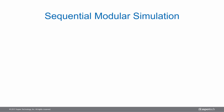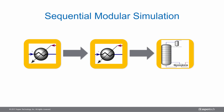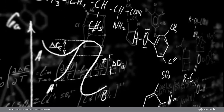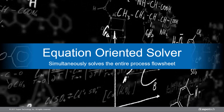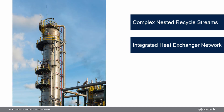When compared to Sequential Modular Simulation, which solves each unit in a process sequentially, one at a time, the Equation Oriented Simulation simultaneously solves the entire process by treating the entire process flow sheet as a set of equations and solving them concurrently. Aspen HYSYS EO solves simulation of process units that have complicated nested recycle loops and heat integration, such as the crude distillation units, significantly faster when compared to Sequential Modeling Technology.